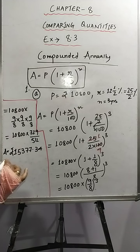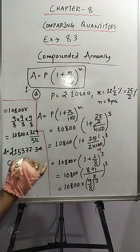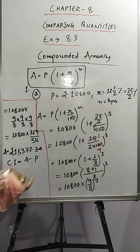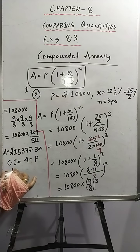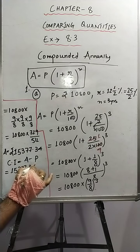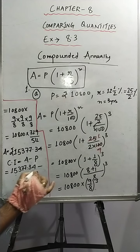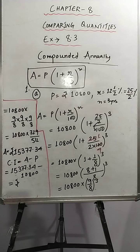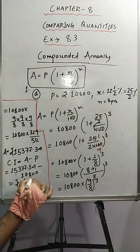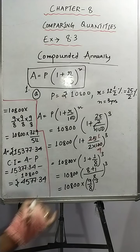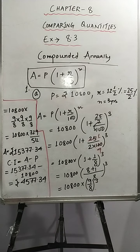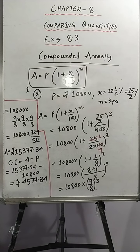So the amount is 15,377.34. Now we find CI: CI = Amount − Principal = 15,377.34 − 10,800 = 4,577.34. So this is the solution of part A. Now let's move on to part B.